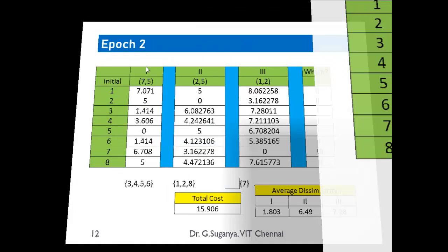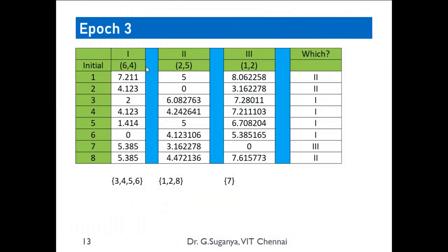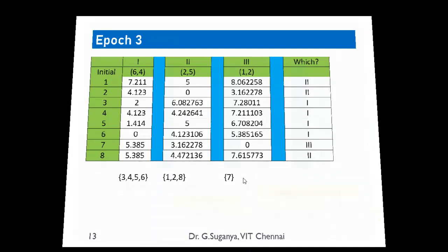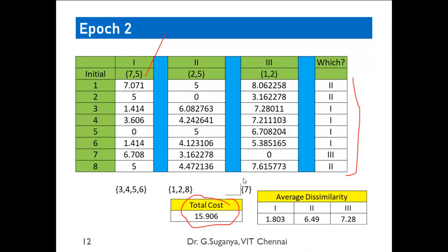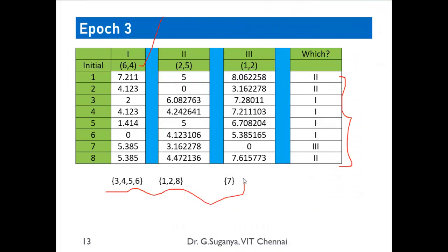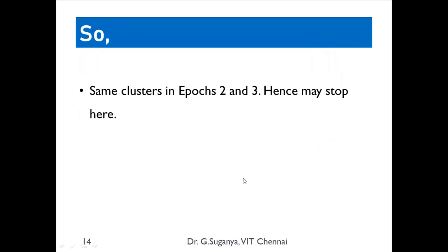In the next iteration, we try yet another medoid — (6,4) — and repeat the same operations. The clusters formed are the same as those from the previous epoch. Since epochs 2 and 3 yield identical cluster compositions, we stop the iteration here. This concludes the K-Medoids example, demonstrating the key difference from K-Means clustering.